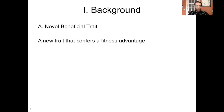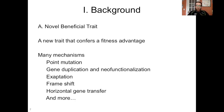A bit of background here. When we say a novel beneficial trait, we mean a trait that confers a fitness advantage and is new in the organism that experiences it. There are a bunch of different mechanisms that allow an organism to acquire a new beneficial trait. It could be something as simple as a point mutation — one base changes to another, and you get a new beneficial trait. It could also be gene duplication and neofunctionalization: that's when you have one gene, it duplicates, and then one of them changes and acquires a new function.